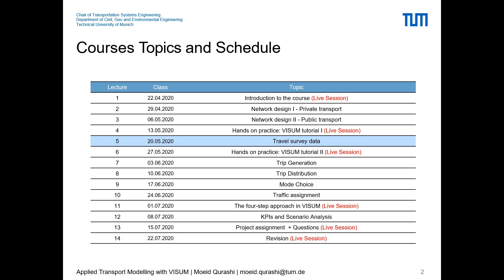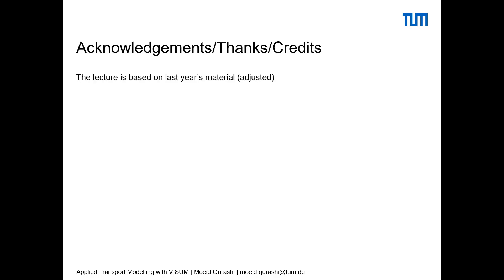In the following lectures we will look in detail at the four-step modeling: trip generation, distribution, mode choice, and trip assignment. One of the prerequisites for trip generation is household survey data, and one of the prerequisites for mode choice is mode choice data — how people choose different modes. Today we will go through different types of data, different ways of collecting them, and how we can use and manipulate them.